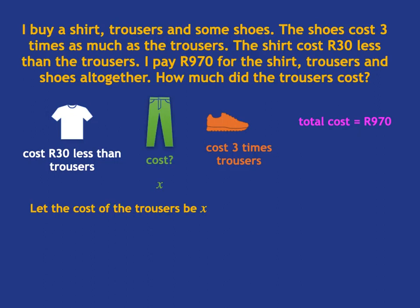Once I have called the cost of the trousers x, it's easy to write an expression for the cost of the shirt. Because the shirt is just 30 rand less than the trousers, if I take x and subtract 30, I get the cost of the shirt: x minus 30. The shoes cost three times as much as the trousers, so they're given by 3x. Now I know if I add all those costs together I'll get 970, so I can write the equation: (x minus 30) plus x plus 3x equals 970.